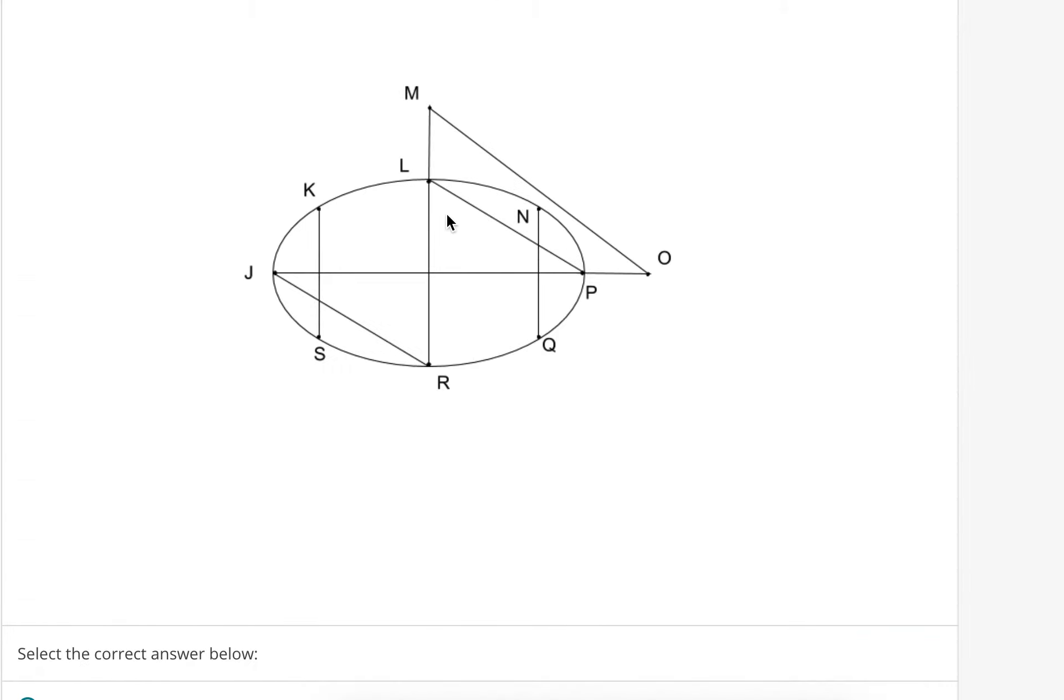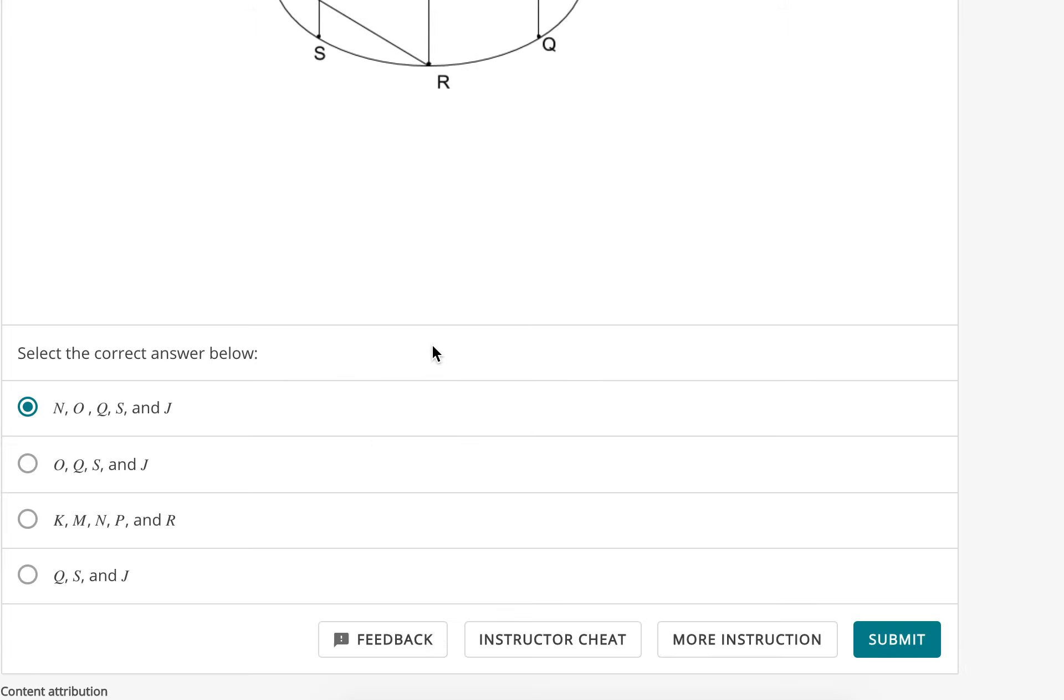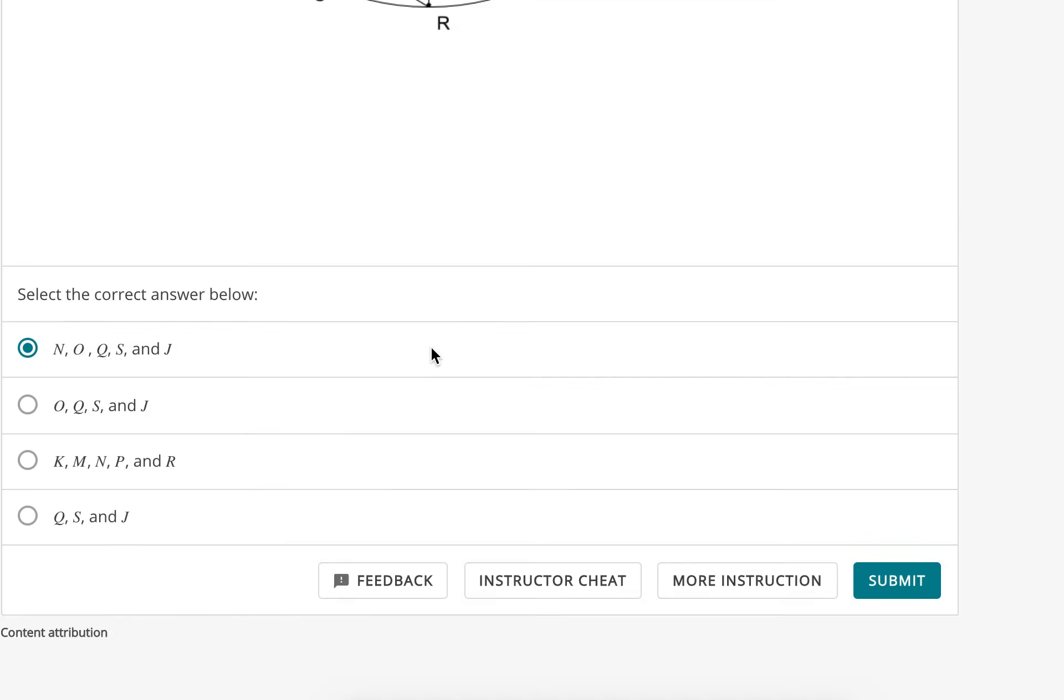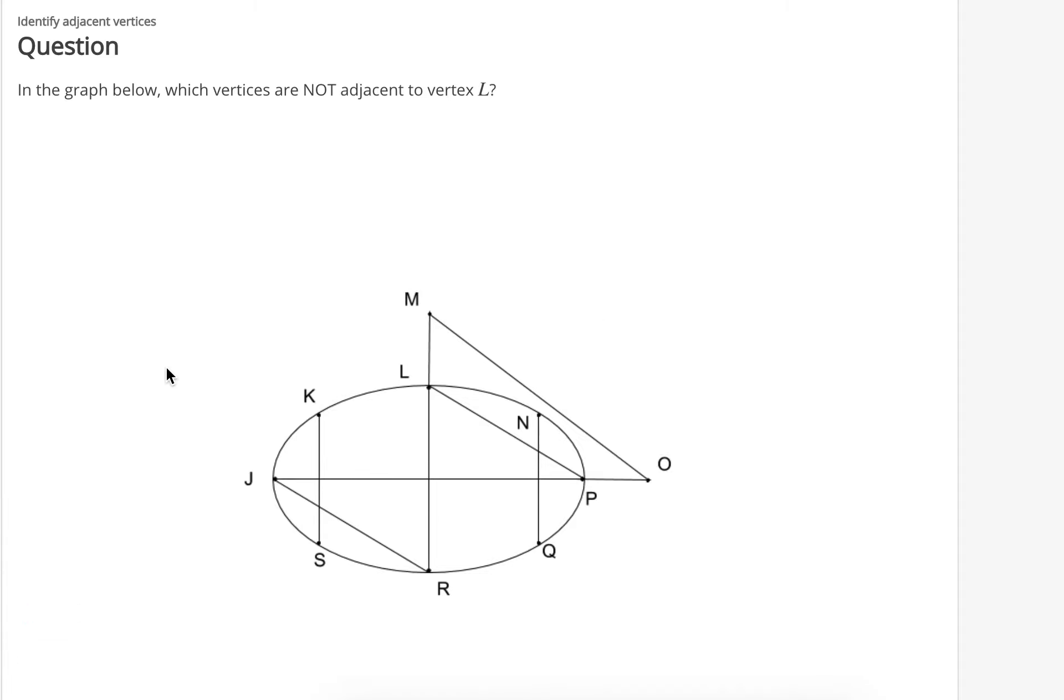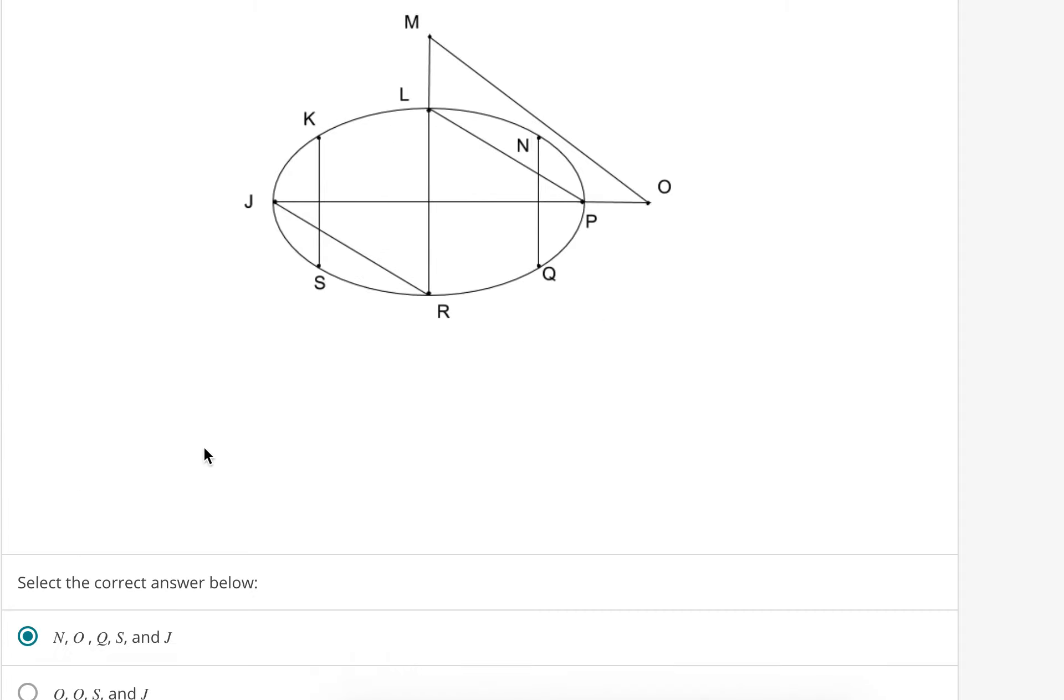Okay, L to P, no, P is adjacent. L to O, you can't get from L to O with just one vertex, so O needs to be ruled out. This one's not correct because it says N is not adjacent. We're supposed to find the vertices that are not adjacent to L. N is adjacent to L, so we can rule that out.